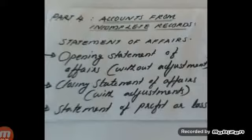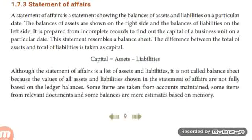Before solving problems, let me explain the meaning of statement of affairs. The financial position of a sole trader is ascertained by preparing a statement called a statement of affairs. It is a statement setting out the estimated values of assets and liabilities on a given date. It resembles a balance sheet, but it is not called a balance sheet because the amounts shown are not the balances of ledger accounts. Under the voluntary system, the value of assets and liabilities may be set out on two sides of the statement of affairs.